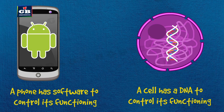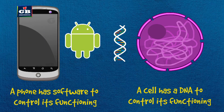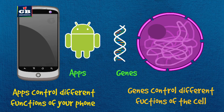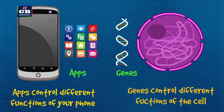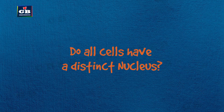Your phone has software to control its functioning. In the same way, every cell has DNA to control its functioning. Our phones have different apps to execute different tasks. In the same way, DNA has different genes to execute different tasks. Functional segments of DNA are called genes.